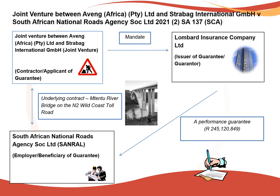In August 2017, a joint venture between Aving and Straubach was concluded. They concluded a contract with the South African National Roads Agency, or SANRAL, to construct a river bridge on the N2 Wild Coast Toll Road in the Eastern Cape. The joint venture — the applicant in the case — caused a performance guarantee subject to South African law to be issued by Lombard Insurance Company in favour of SANRAL as beneficiary.